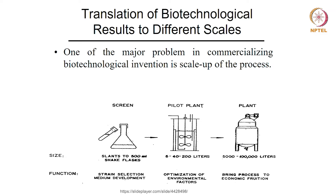Then the production scale plant can go as high as 5,000 to 100,000 litres. The shake flask and slant level studies are generally used for strain selection and medium development. At the pilot scale, we check reproducibility where optimization is done to bring it closer to the lab scale reactor levels. At the lab scale reactor level, we carry out optimization of environmental factors. Then at the production scale, we bring the process to economic fruition.